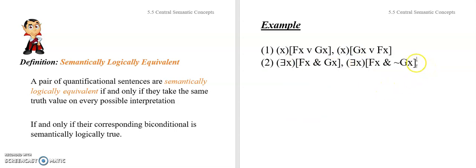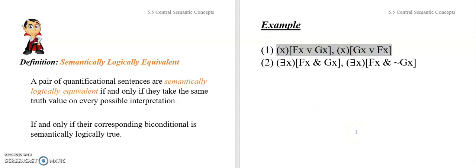Intuitively, the first pair is going to be logically equivalent to one another because the order in which F and G appear doesn't matter — you can apply commutativity, and we'll explore that in chapter six. The second pair is not semantically logically equivalent, and you could prove that by finding at least one interpretation on which they take different truth values.